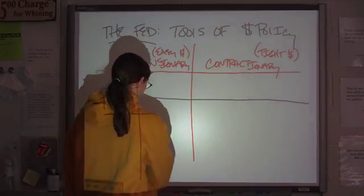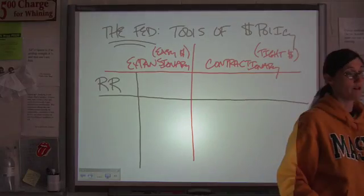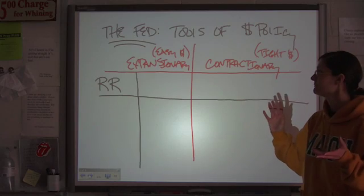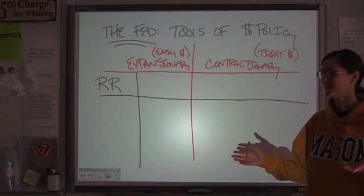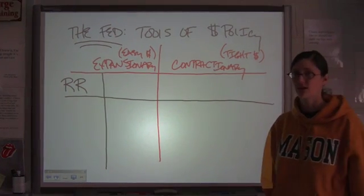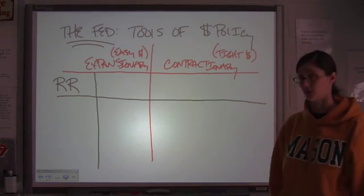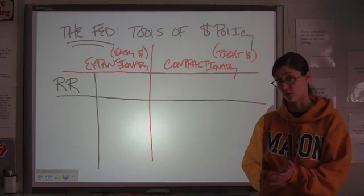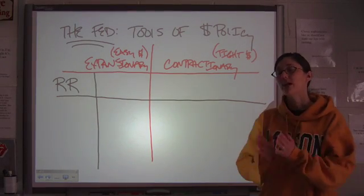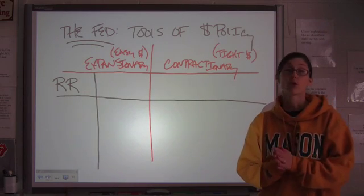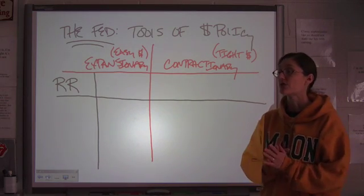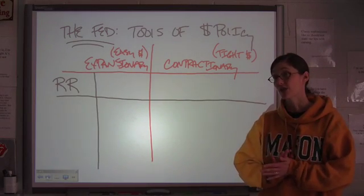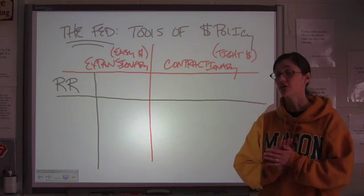The first thing that the Fed can change — and this one they really don't use very often because you could potentially destabilize the whole system if you mess with it too much — is the reserve requirement. What we mean by reserve requirement, or required reserves, is the percentage of the bank's total deposits that they must hang on to, either as vault cash